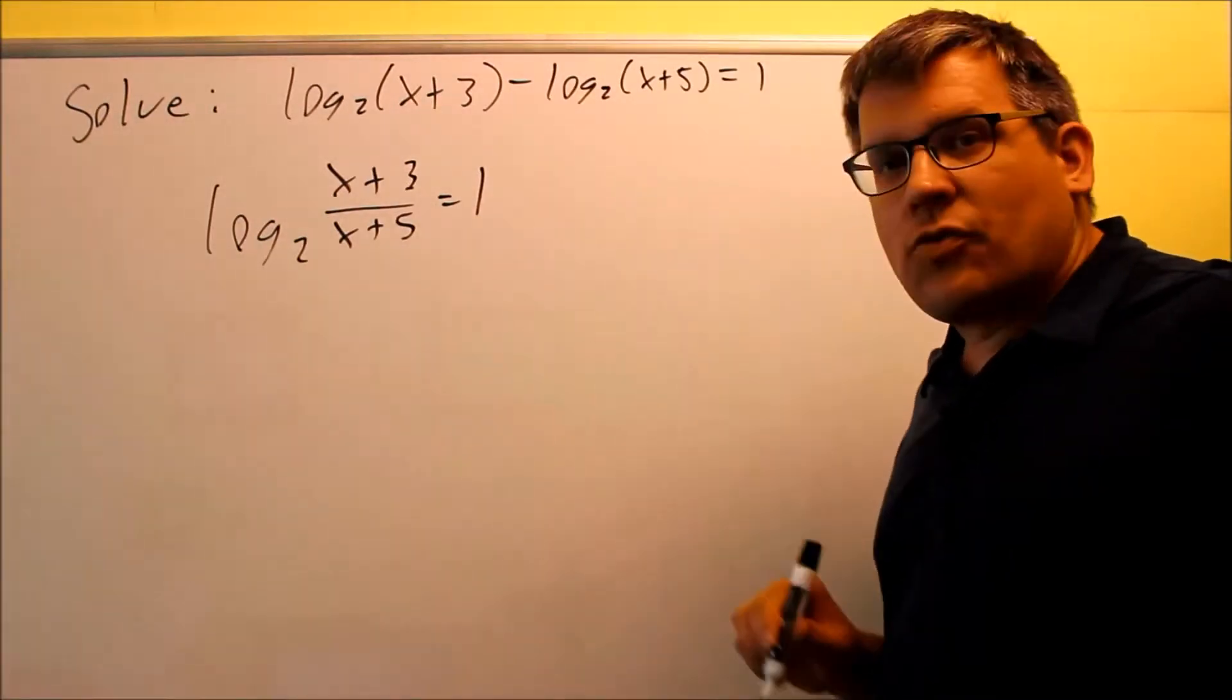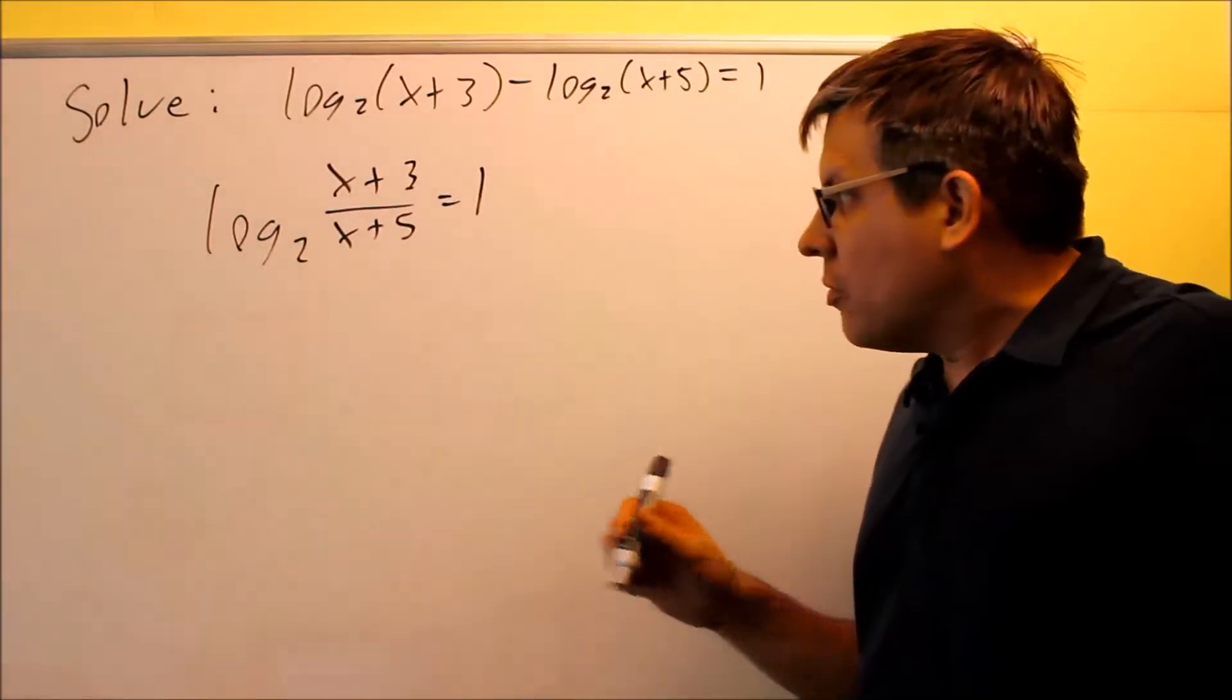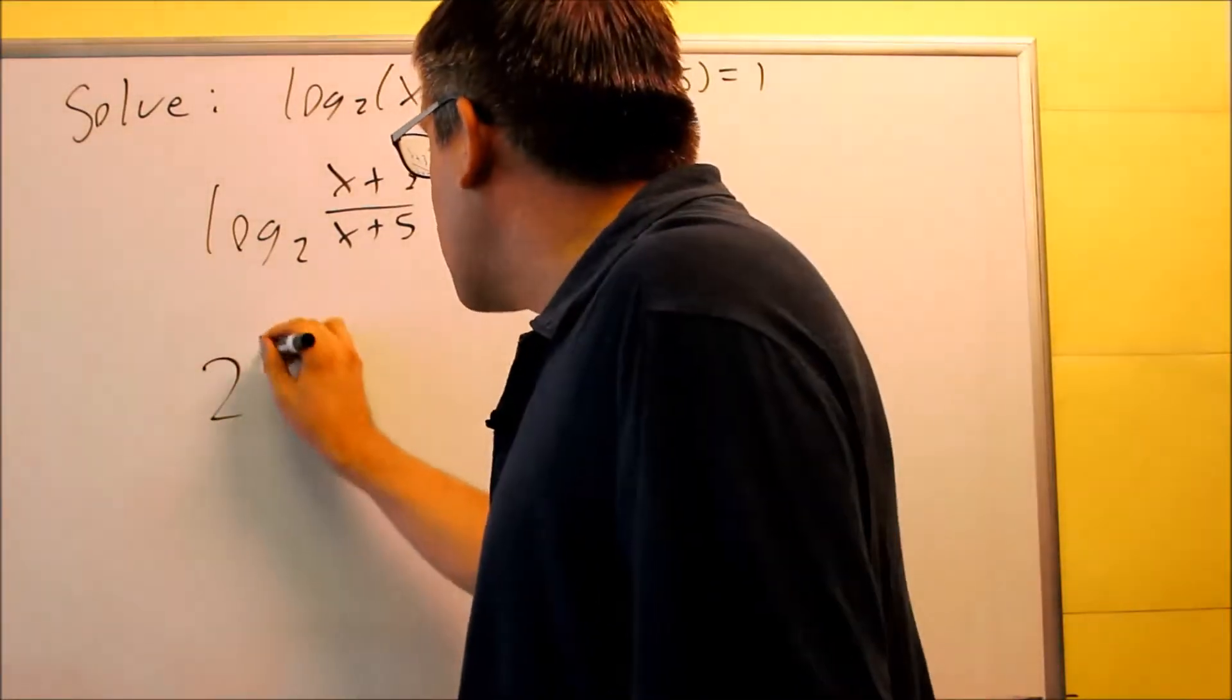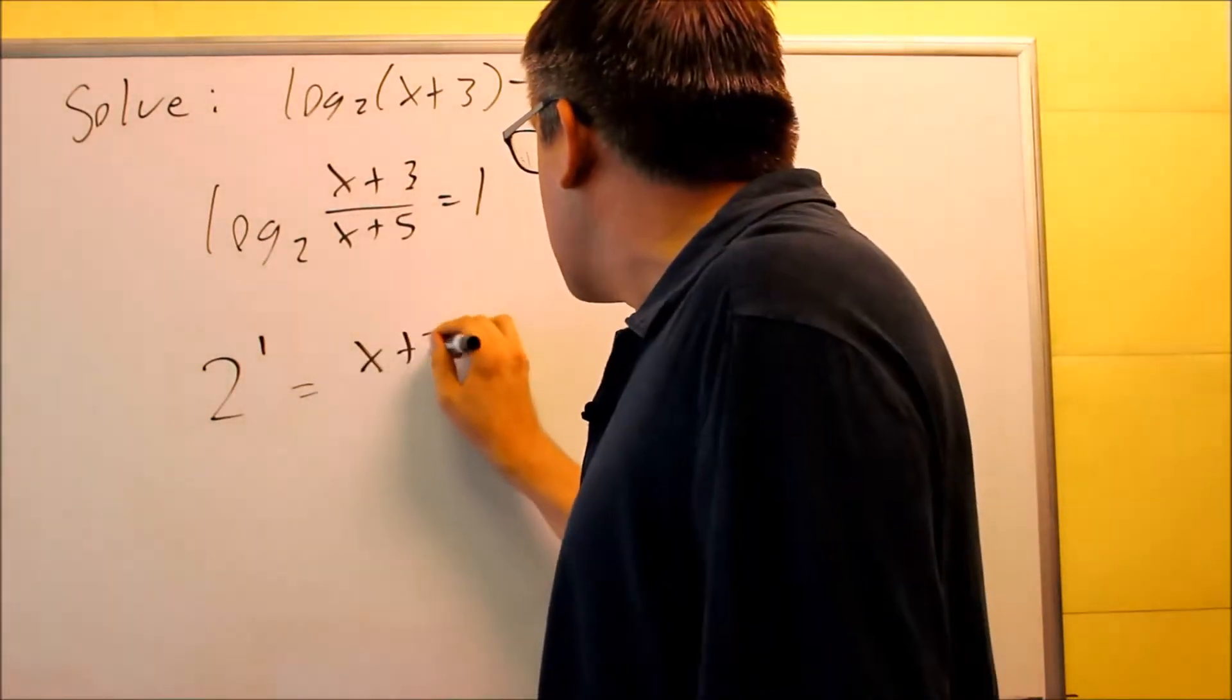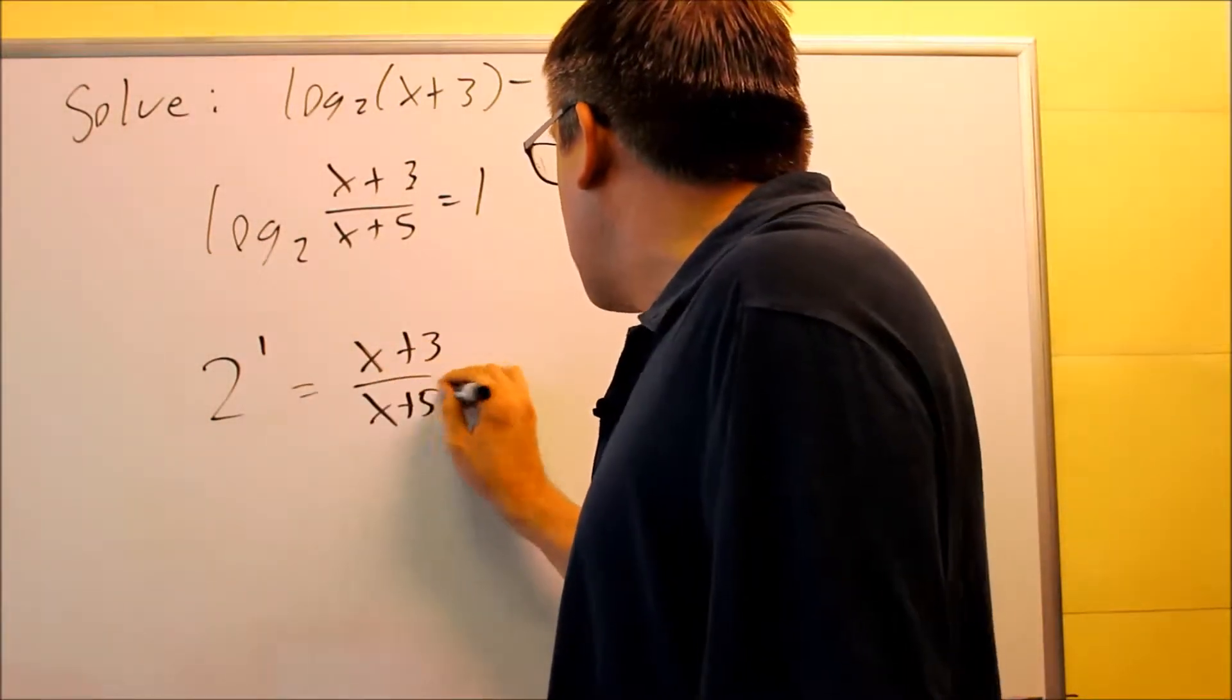We need to change this from log form into exponential form. The 2, we're going to raise that to the first power, the base, raise the number after the equal sign. That's going to equal x plus 3 over x plus 5.